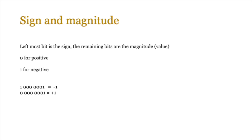Another option is sign and magnitude: the leftmost bit is the sign bit — zero for positive, one for negative — and the remaining seven bits are the magnitude. So minus one would be 10000001, and positive one would be 00000001. However, with long strings of binary digits it becomes difficult to identify the sign bit, which is where twos complement is more reliable — it uses an algorithm, making it more secure and consistent for representing both negative and positive numbers.